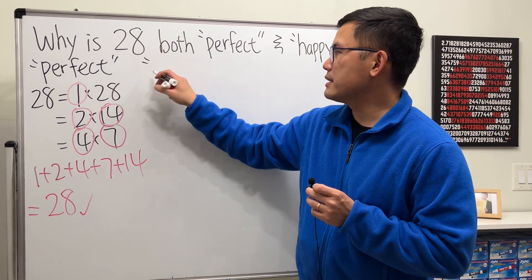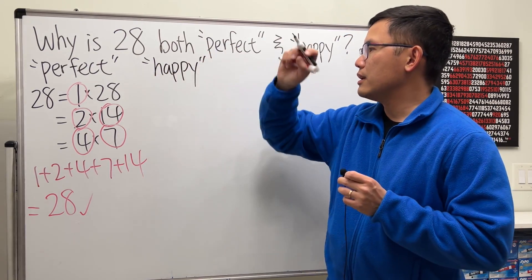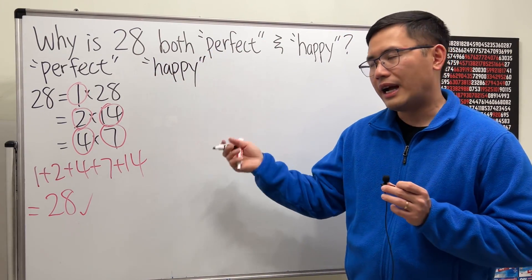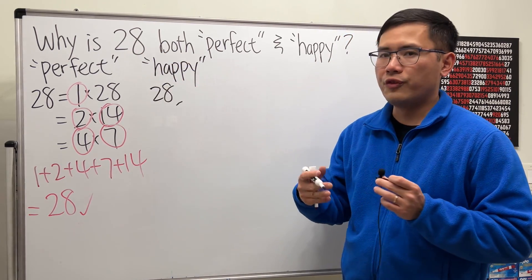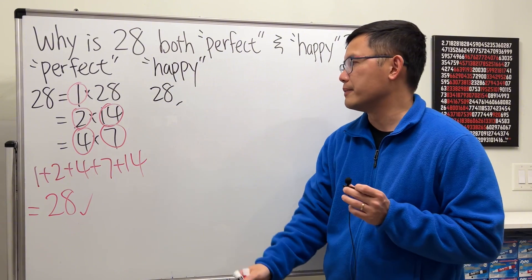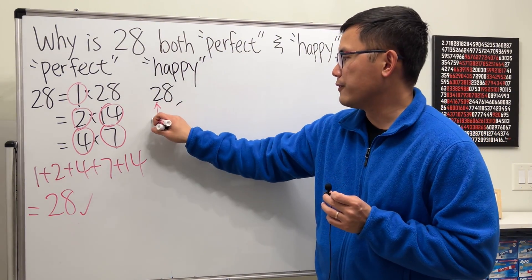Next, let's talk about what makes this number happy. So this is the trick here. Have a look. I'm going to start with 28, and I'm going to form a sequence in the following manner. I'm going to look at the first digit, and I will square that, which is 4.